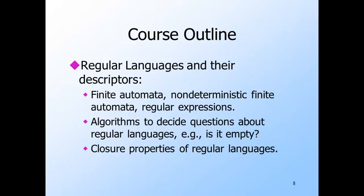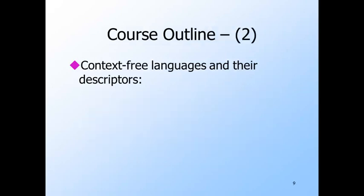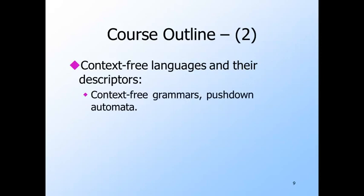It is this tractability — our ability to understand what simple formalisms like finite automata or regular expressions do — that makes them so very valuable when they can be used. We'll also talk about closure properties of regular languages: for example, the union or intersection of two regular languages is also a regular language. The next big topic will be context-free languages, a somewhat larger class than the regular languages, enabling us to do things like match balanced parentheses or XML tags.